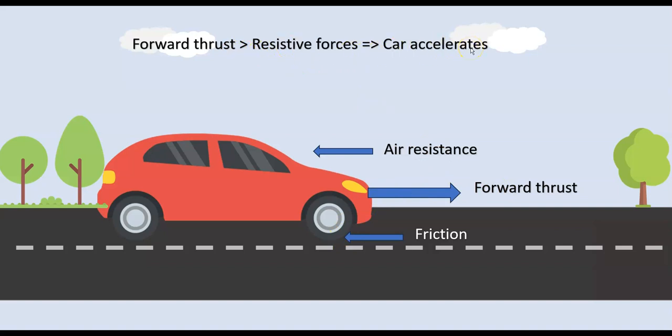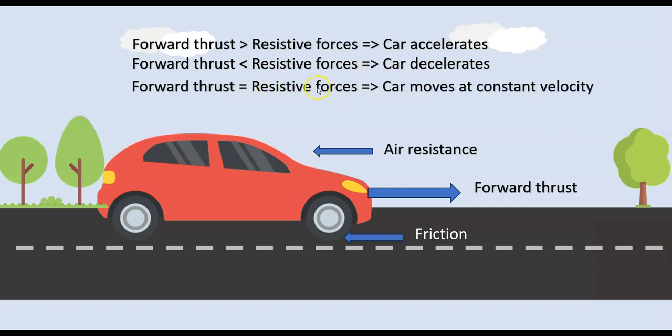If the forward thrust is greater than the resistive forces, the car will accelerate. If the resistive forces are greater than its forward thrust, then the car will decelerate. If the forward thrust equals the resistive forces, the acceleration will be zero. Zero acceleration does not mean the velocity is zero; it means the velocity is constant.